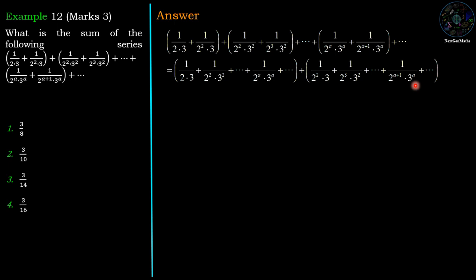Now in the second bracket, 1/2 can be considered as a common factor. Then we have 1/(2×3) plus 1/(2²×3²) plus 1/(2^n×3^n), which is similar to the first bracket series. So both brackets represent the same series and the multiplier factors are 1 and 1/2.